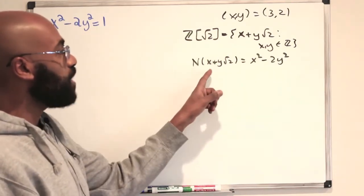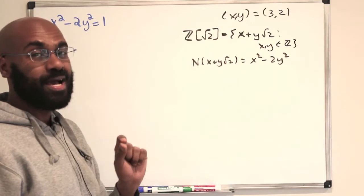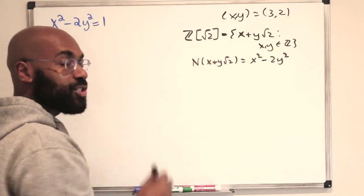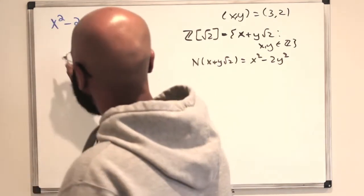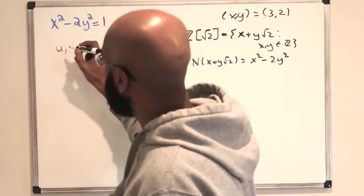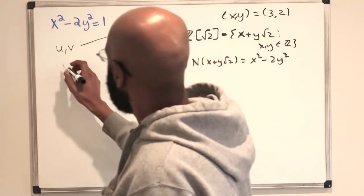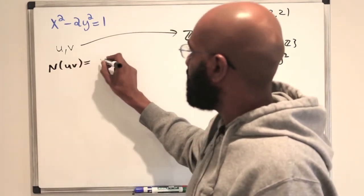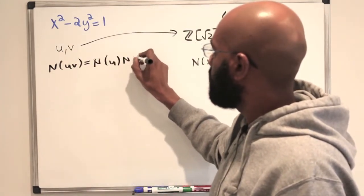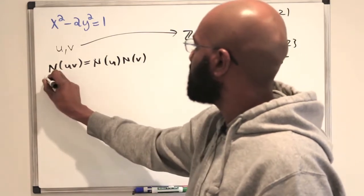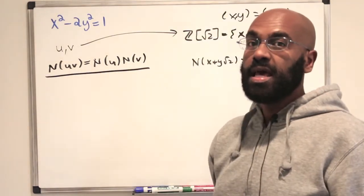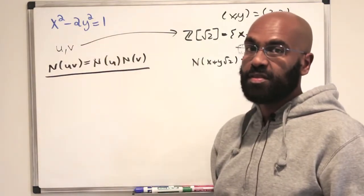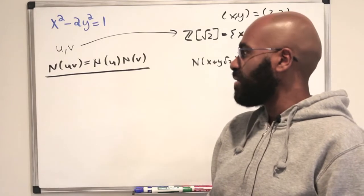One particular property of this norm function that will be especially useful is that the norm function is multiplicative. What that means is: if we pick two numbers u and v in our number system, then the norm of u times v is actually equal to the norm of u times the norm of v. I want to take some time to actually prove this, because we're going to need it in developing infinitely many pairs of integers x, y that satisfy this equation, and subsequently being able to approximate root 2 by rationals.